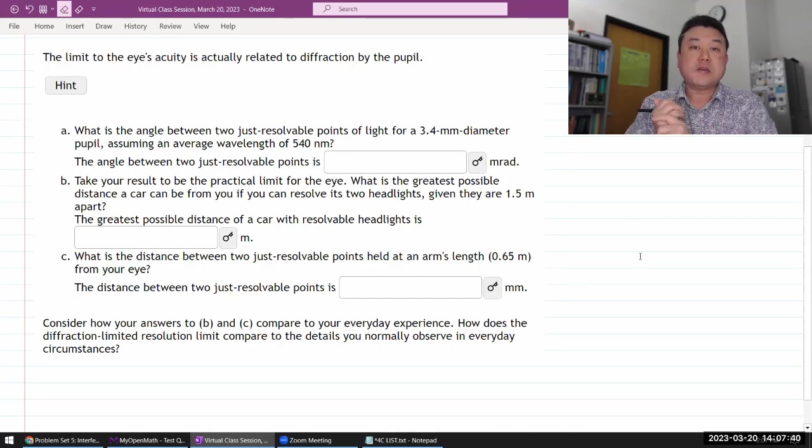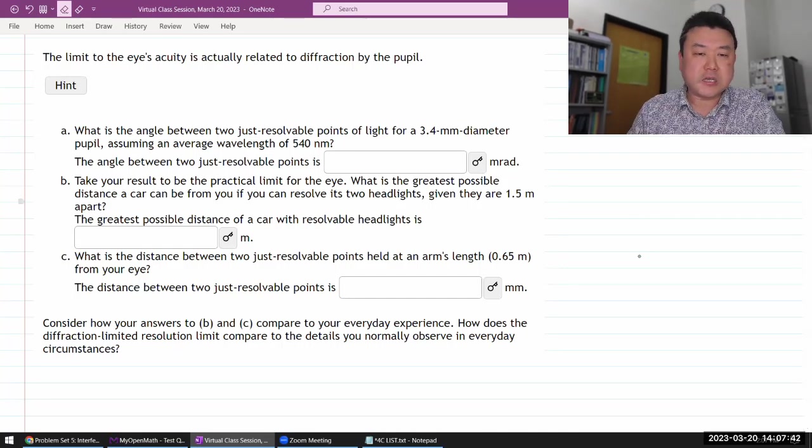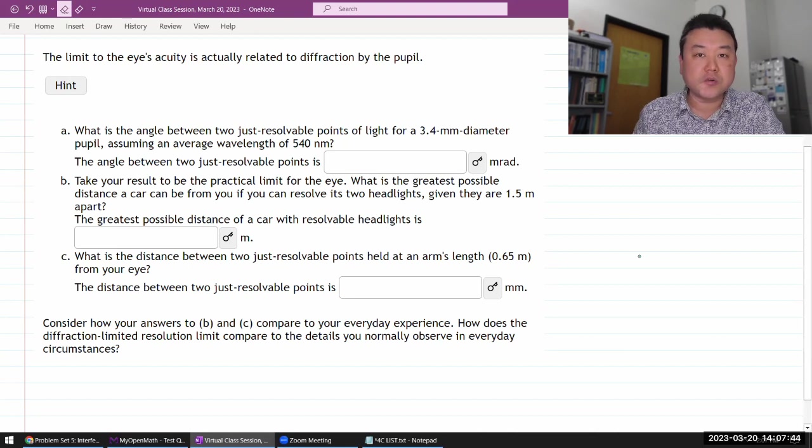Okay, let me start out with this question. It says the limit to the eye's acuity is actually related to diffraction by the pupil.